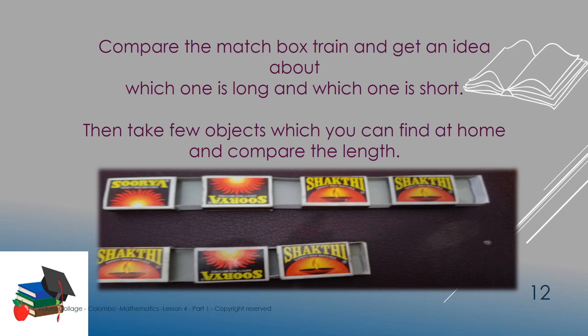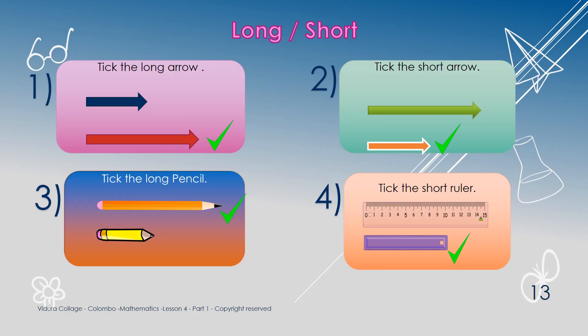Now, compare them and find long and short. Check the difference between these trains. You can use some stones, buttons, tonic lids like this to make different trains. To do this activity, you have to get the help of your parents. Parents can draw these pictures and let them to do the activity.